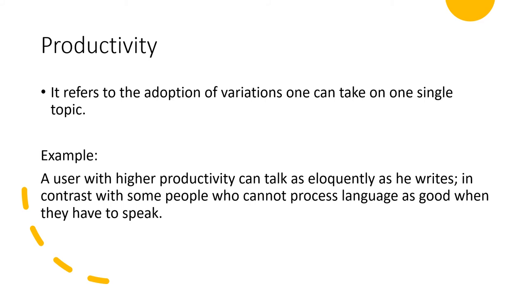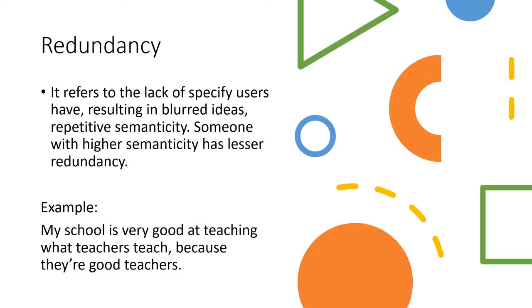We also have redundancy. Redundancy refers to the lack of specificity users have, resulting in blurred ideas and repetitive semanticity. Someone with higher semanticity has lesser redundancy.